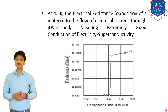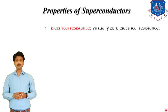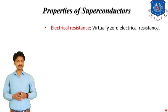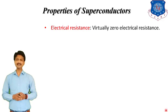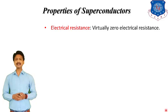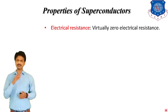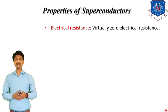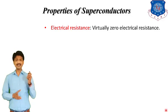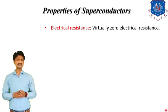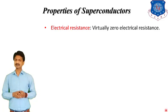Now let's discuss the properties of superconductors. The first property is electrical resistance: a superconductor has a very low value of resistance, or virtually zero electrical resistance.